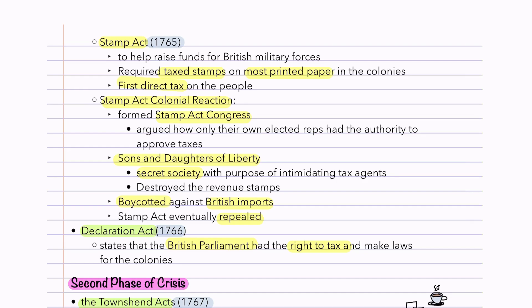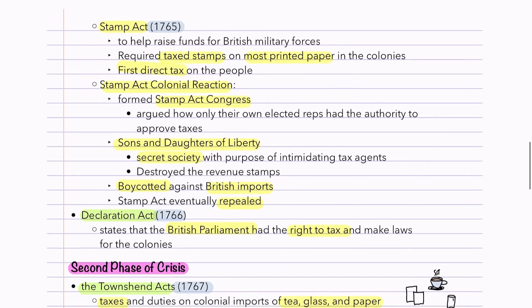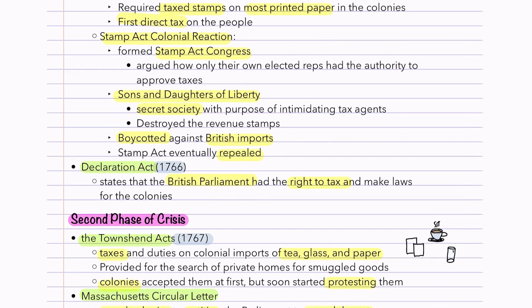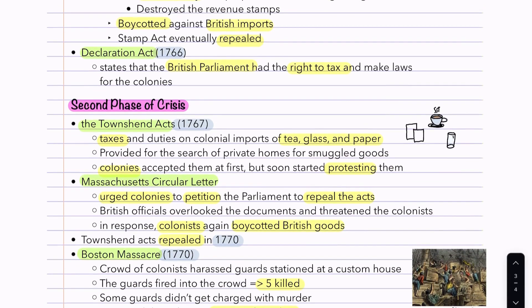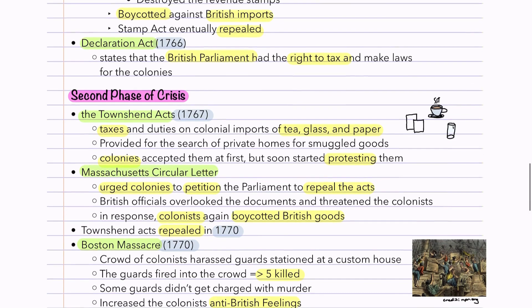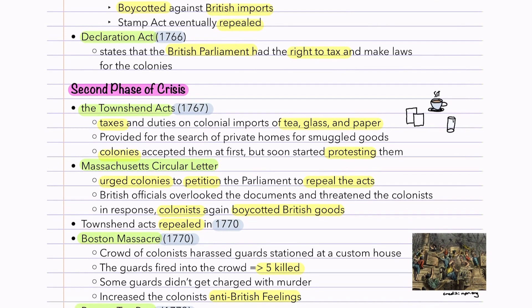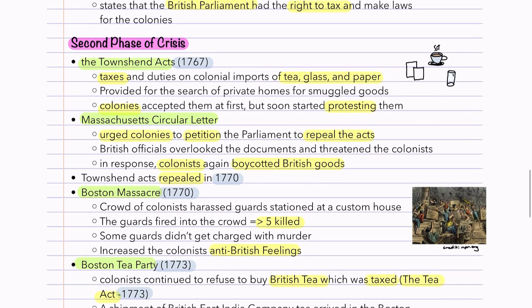The Declaratory Act in 1766 stated that the British Parliament had the right to tax and make laws in all circumstances whatsoever — essentially saying they'd take the Stamp Act away, but still reserved the right to do so in the future. They made good on that threat with the Townshend Acts in 1767, which imposed taxes and duties on colonial imports of tea, glass, and paper. The acts also provided for the search of private homes for smuggled goods using writs of assistance — a general document certifying any official could search any home or private property, not specific like a warrant. The colonies accepted them at first but soon started protesting.